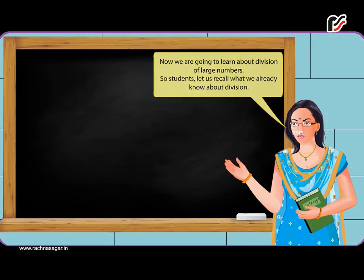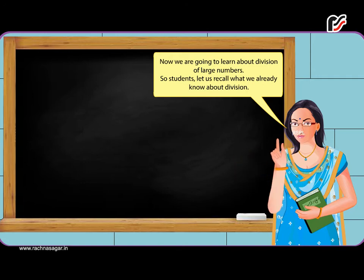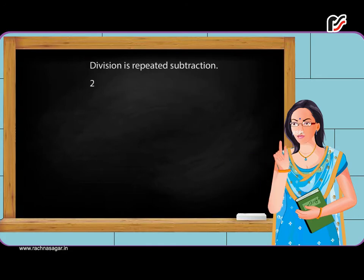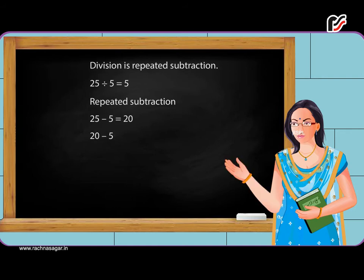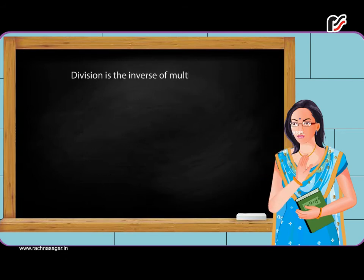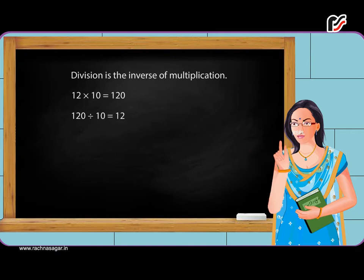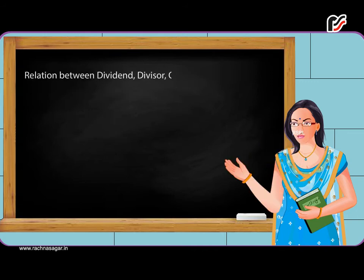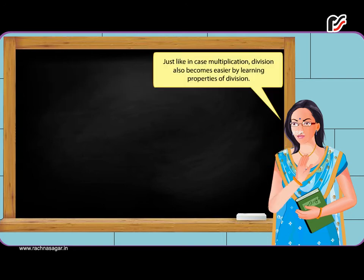Division of Large Numbers: Now we are going to learn about division of large numbers. Let us recall what we already know about division. Division is repeated subtraction: 25 divided by 5 is equal to 5, verified as 25 minus 5 minus 5 minus 5 minus 5 minus 5 equals 0. Division is also the inverse of multiplication: 12 multiplied by 10 is equal to 120; 120 divided by 10 is equal to 12; 120 divided by 12 is equal to 10. The relation between dividend, divisor, quotient, and remainder is: dividend equals divisor multiplied by quotient plus remainder.